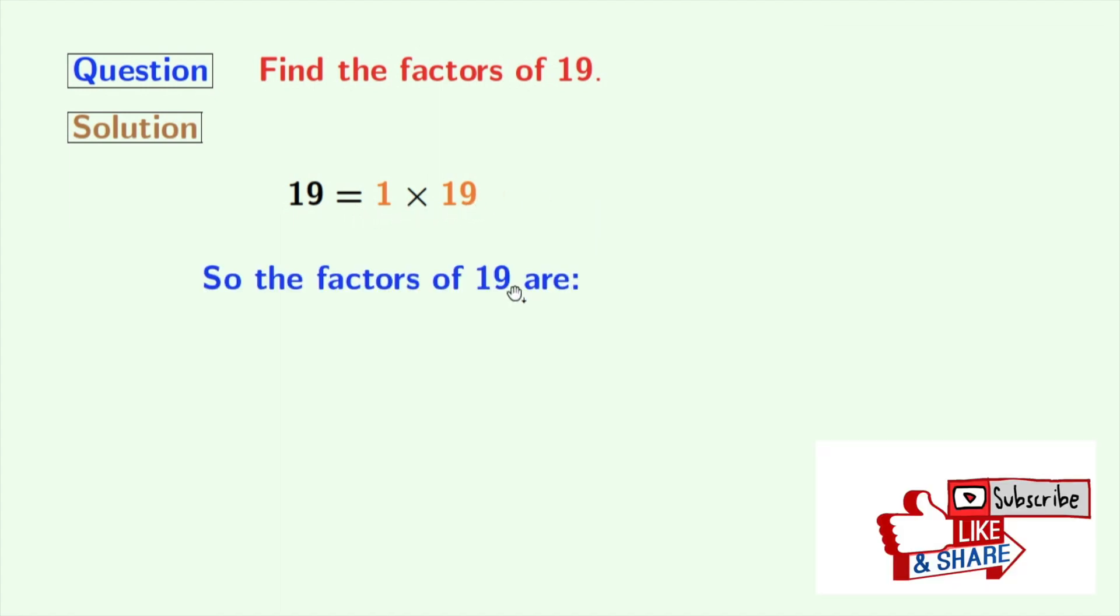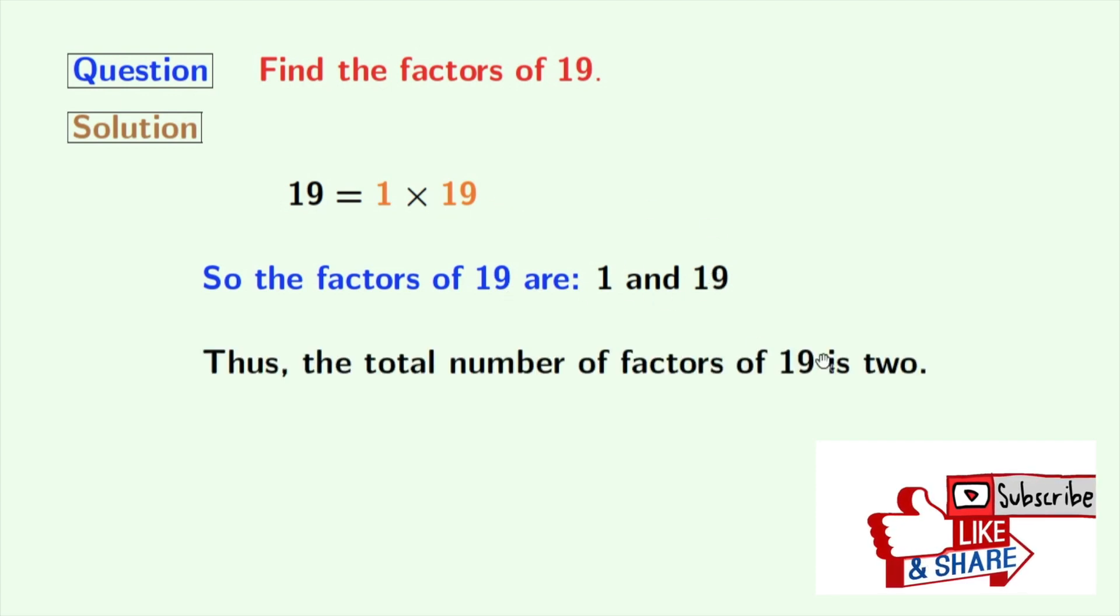So the factors of 19 are 1 and 19. Thus, the total number of factors of 19 is two.